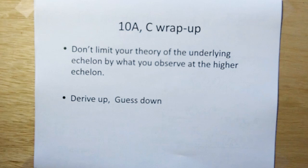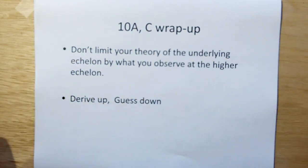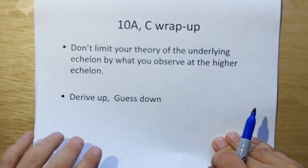So 10a and c wrap-up. Don't limit your theory of the underlying echelon by what you observe at the higher echelon. The lower echelon may look nothing like what you're observing at the upper echelon. And derive up, but you can guess down. You can derive equations going down, but you've got to remember that's going to be a guess. Just because you can derive and get down there does not mean that your derivation going down is valid. But it may be a good guess, a good gateway to get your foot in the door.